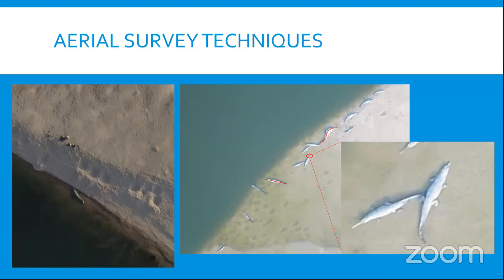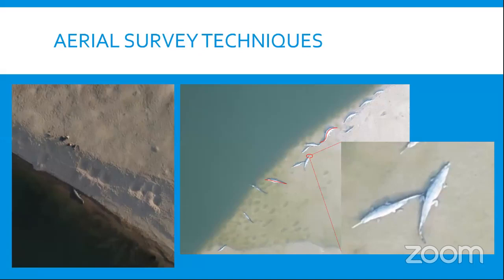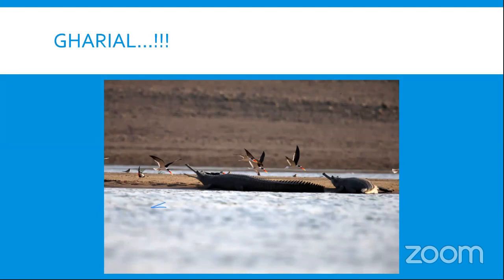Why gharials and rivers? What is the correlation? Gharials are the top predators in the river ecology — gharials and muggers together. If you remove any participant from the food chain, it will collapse the whole ecosystem. The question is: why can't we see gharials in all river systems the way we see muggers everywhere? Gharials need a certain characterized habitat. They need high sand banks with deep pools.